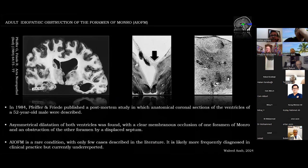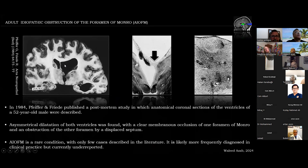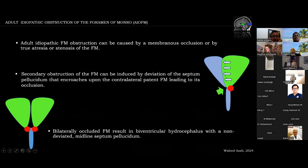Next is adult idiopathic obstruction of the foramen of Monro, which is quite a rare pathology first reported in 1984 in anatomical coroner sections of a post-mortem case of a 52-year-old male, describing asymmetrical dilatation of both ventricles and membranous occlusion of the foramen of Monro on one side, and obstruction by the deviated septum pellucidum on the other. The obstruction could be caused by membranous occlusion, true atresia or stenosis of the foramen, or deviation of the septum pellucidum encroaching on the contralateral patent foramen.